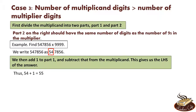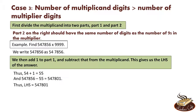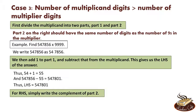Now let's subtract 55 from the multiplicand, that is, let's subtract 55 from 547856. This will give us the LHS. Now performing this subtraction is very easy. 547856 minus 55 gives us 547801. Now finding RHS is exactly same. For RHS, we write the complement of part 2. Now note here, we do not write the complement of the multiplicand. We only write the complement of part 2. So RHS is equal to complement of 7856 which is equal to 2144. So our answer is 547801 2144.